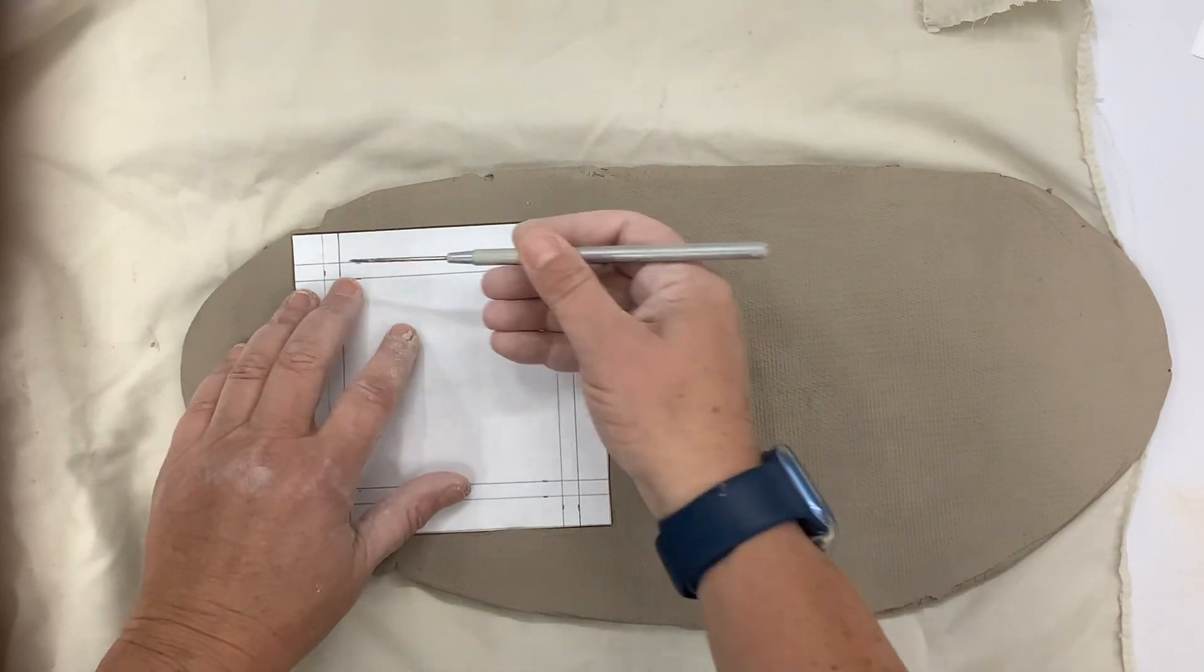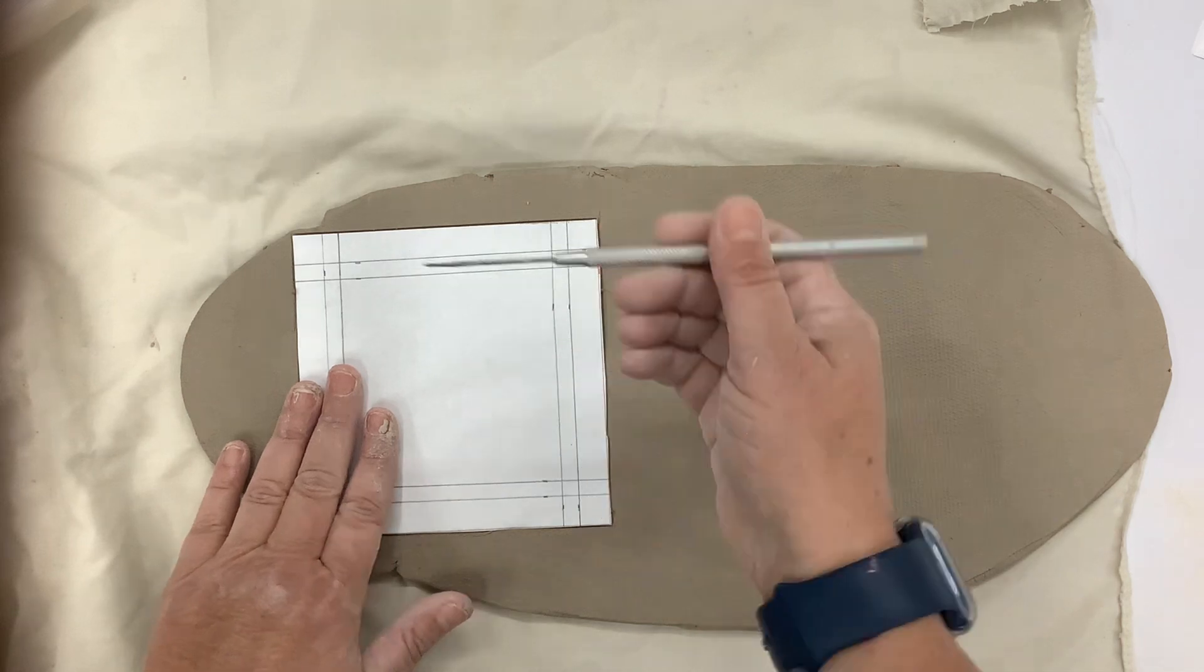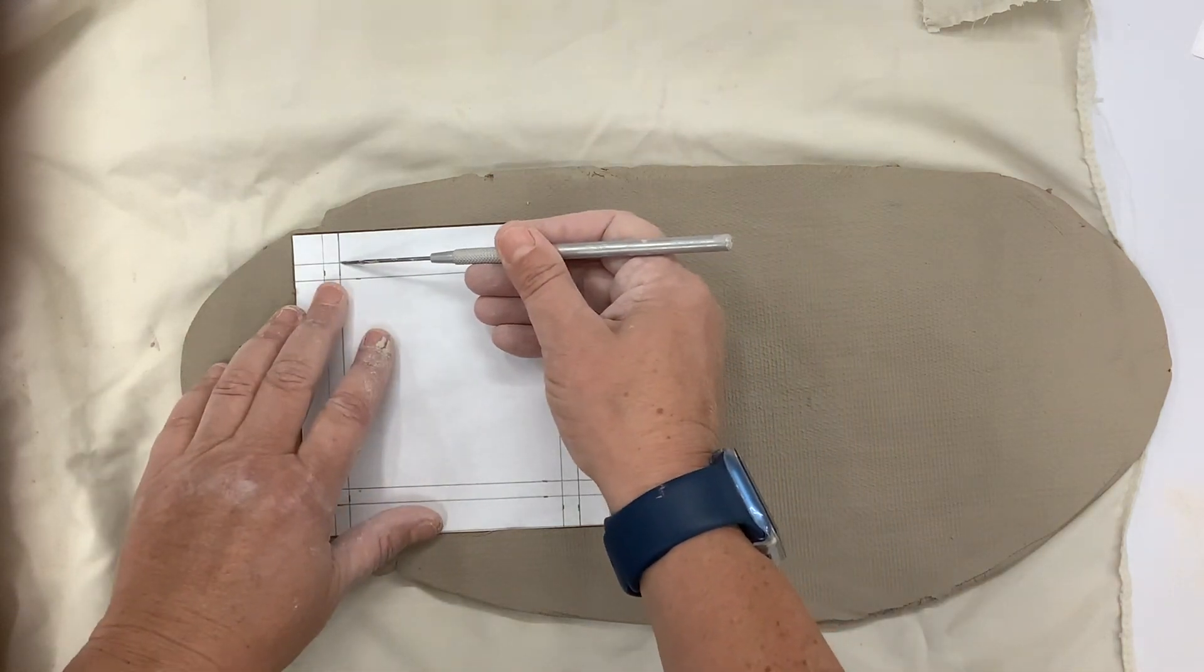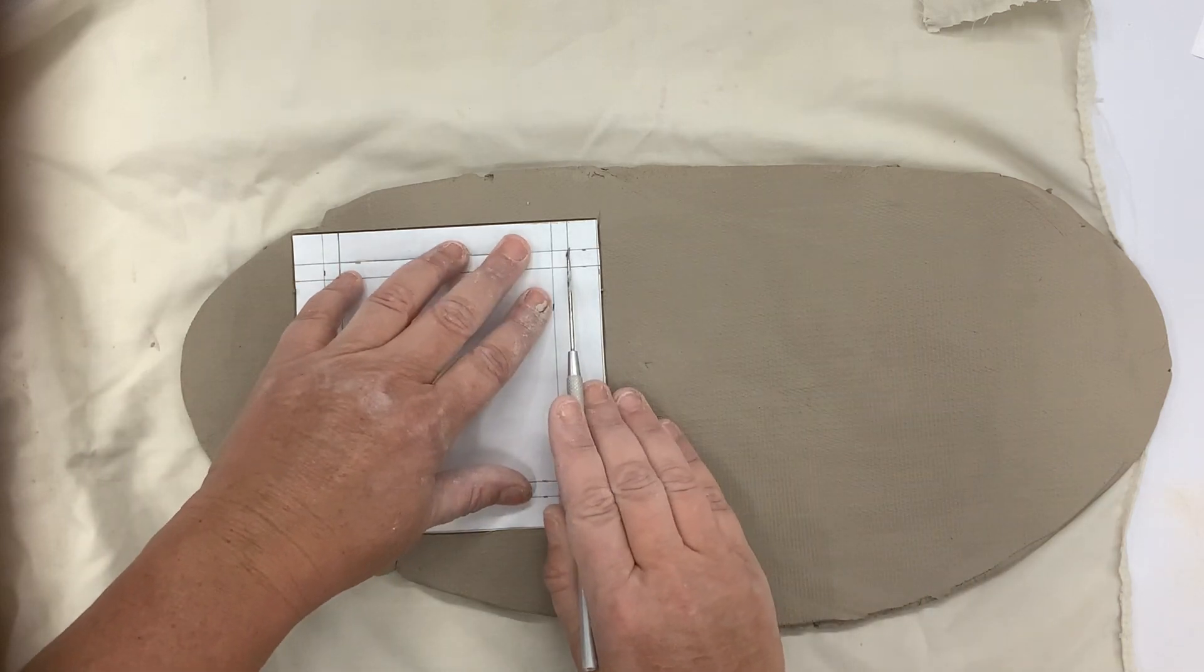I'm going to take my needle - I don't want to poke into the clay like this. I want to hold my needle to the side and just push along these lines on the inside so I know where my borders are going to be.